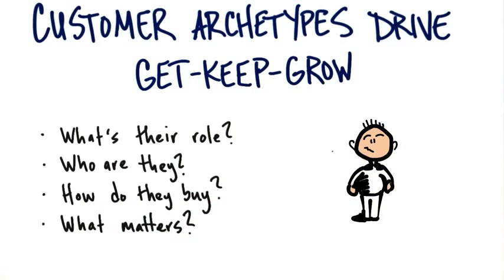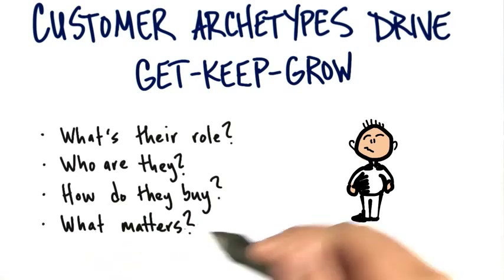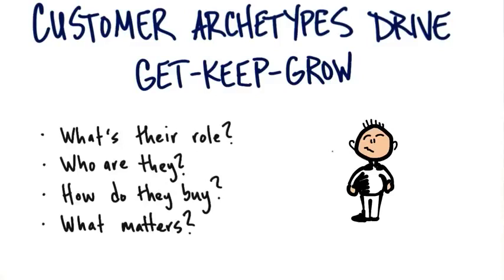One of the interesting things is there are some customers that are users — like in Google, there are people who use search — but there are people who are payers, who are actually a whole different customer segment. So you need to understand: are these people, this archetype I'm trying to define, are they the users or the payers? Are they regulators? Are they somewhere else in the buying process? You're trying to understand what pain is being solved for them and what gain your product is creating for them.